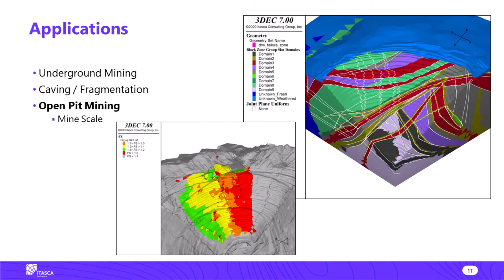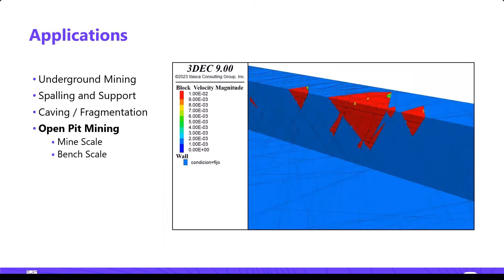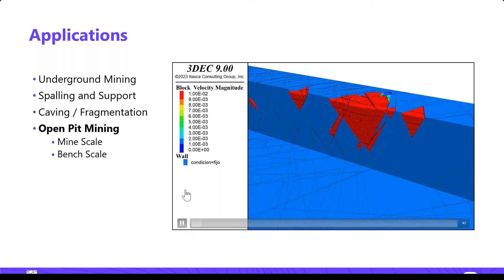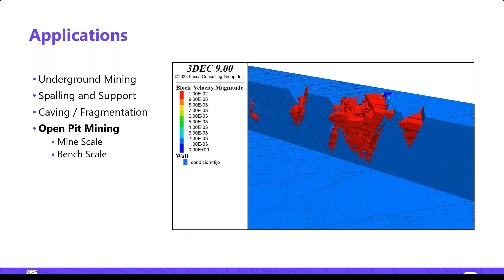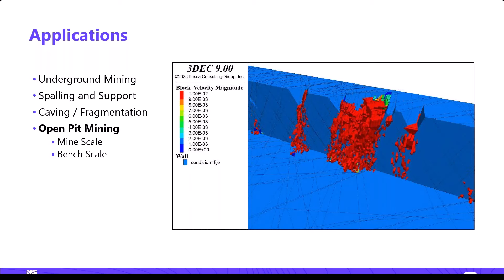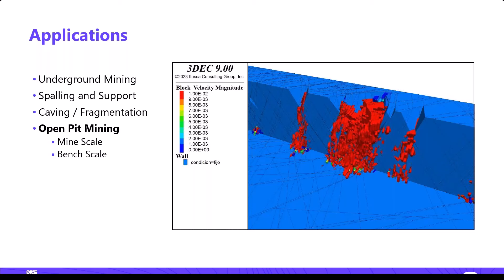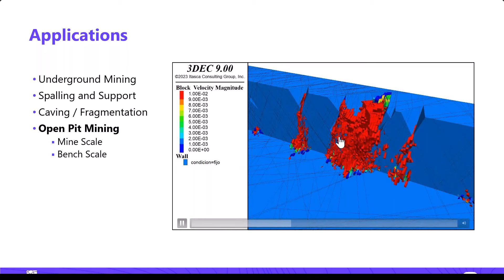In open pit mining you could do something at mine scale, showing an open pit with a bunch of faults. You could also do something at the bench scale — this bench is probably 10 meters high. This example is from our office in Chile, where they were looking at a fractured material and what's going to happen when you activate this bench — are you going to get this kind of failure, and what kind of risk does that pose?